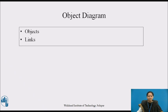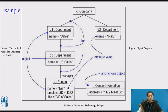Next is the object diagram. An object diagram shows a set of objects and their relationships. These diagrams address the static design view or static process view of a system — as do class diagrams — but from the perspective of real or prototypical cases. Here is an example of an object diagram drawn for the same class diagram shown earlier. We have instantiated each of the classes: Company, Department, Person and Contact Information. C is a variable instantiated for Company. D1, D2 and D3 are departments with names corresponding to Sales, R&D, and US Sales respectively. Person is instantiated with name equal to ARIN, Employee ID 4362, and Title equal to VP of Sales — showing how attributes are given values in every object.